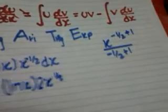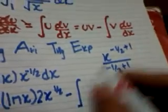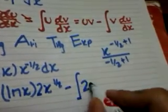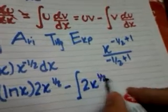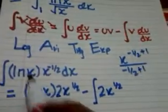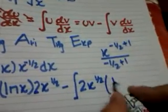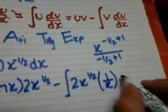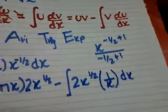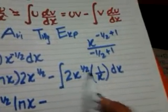Okay, minus the integral of v times du by dx. V is 2x to the power 1 by 2, and the derivative of u, which is ln x, is 1 by x.